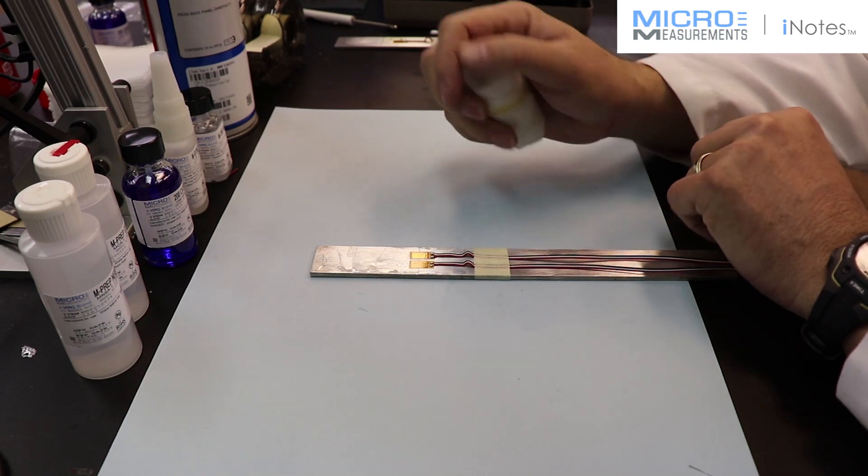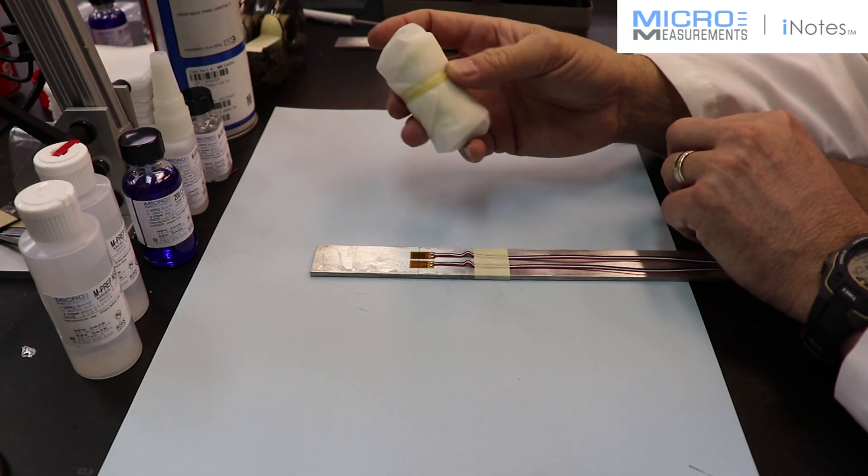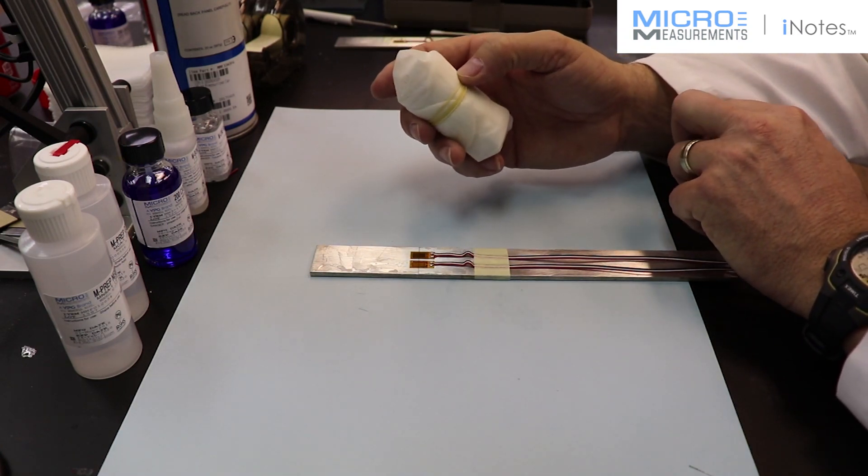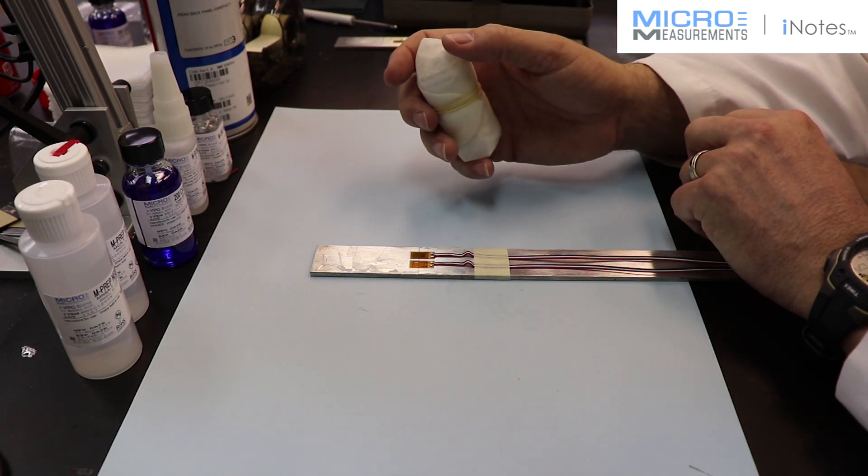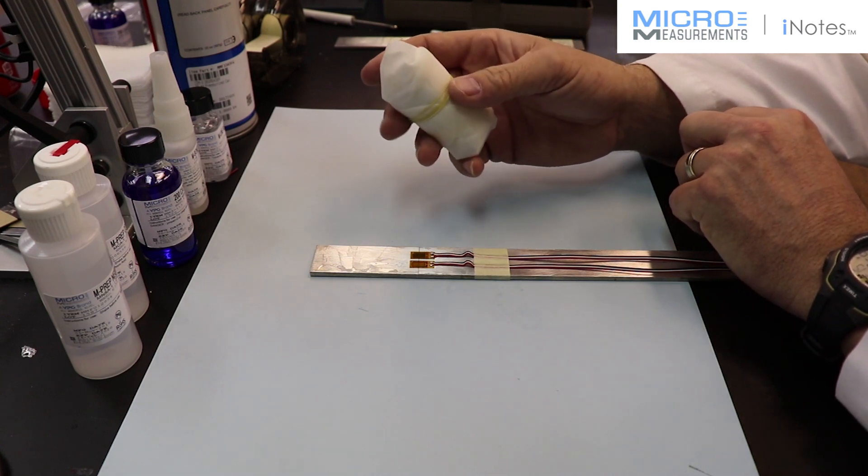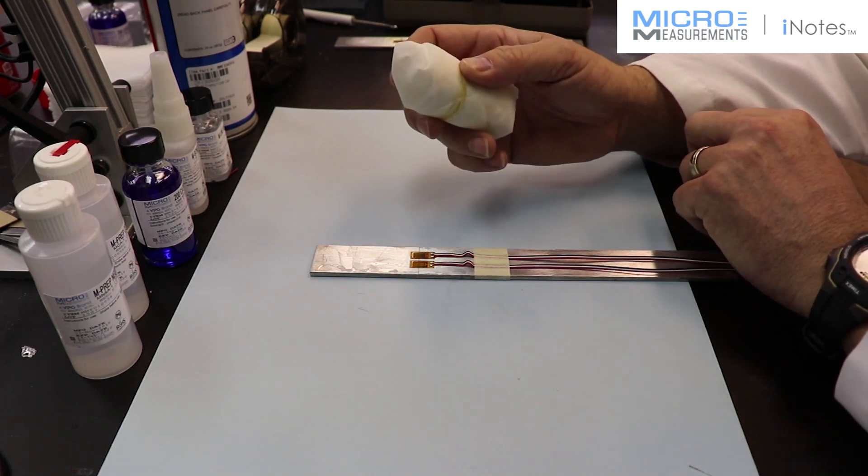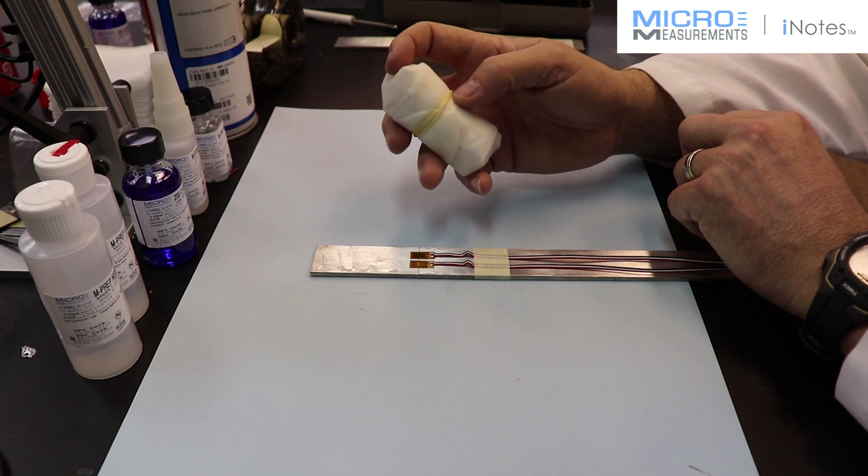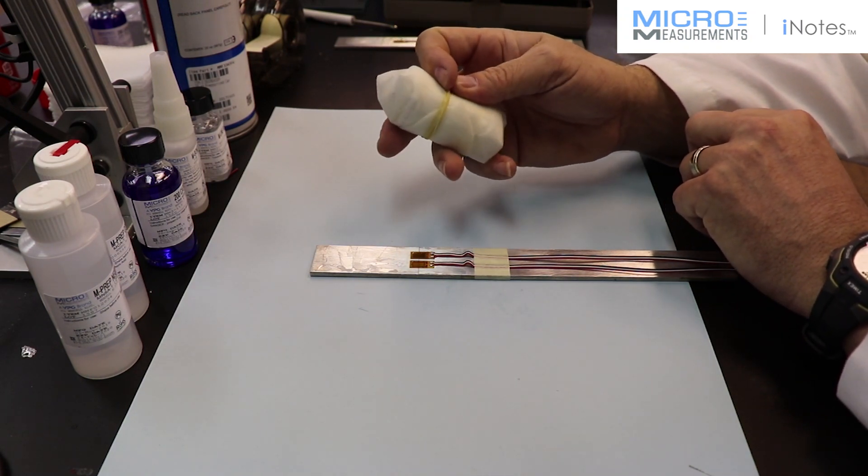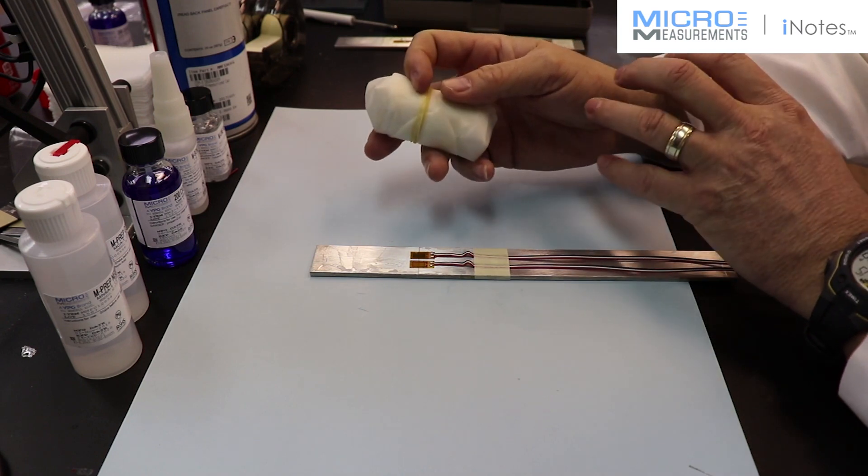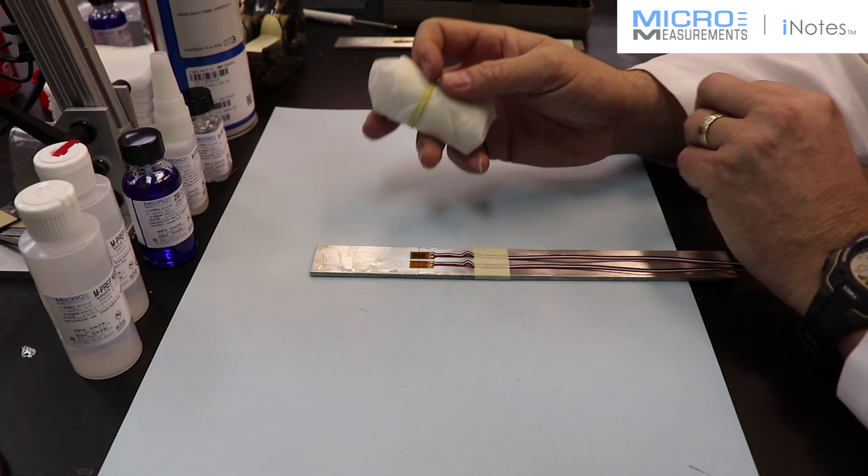We're excited about adding the new advanced sensor strain gauges into our workshop. We've been looking at increasing the resistance of these strain gauges for quite a long time, as we know that most customers use 350 ohm gauges or even higher. Advanced sensors really allows us to push the limits on what can be produced in terms of resistance and size of the gauge.